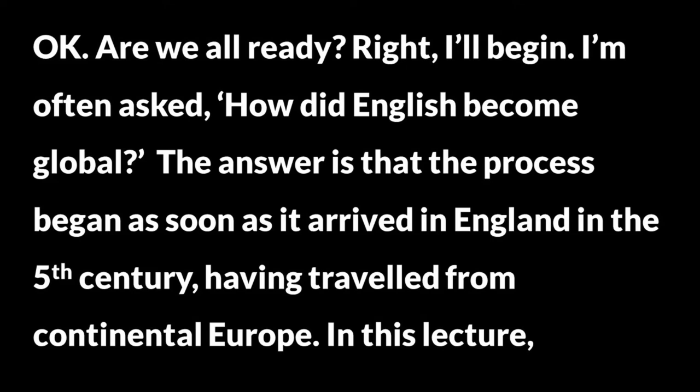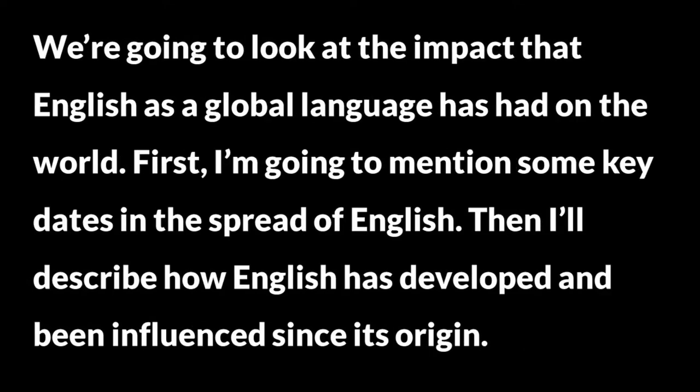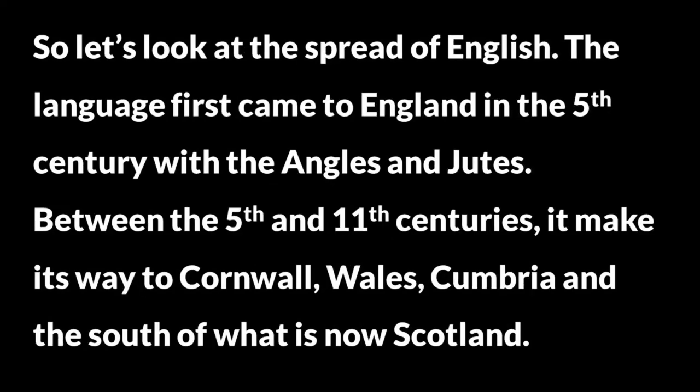I'm often asked: how did English become global? The answer is that the process began as soon as it arrived in England in the 5th century, having travelled from continental Europe. In this lecture, we're going to look at the impact that English as a global language has had on the world. First, I'm going to mention some key dates in the spread of English. Then I'll describe how English has developed and been influenced since its origin.